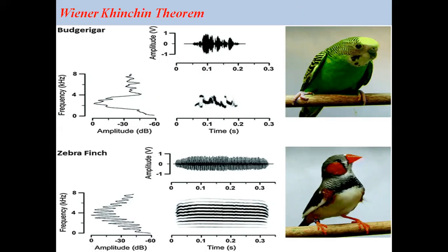Frequency analysis and time domain analysis are like two sides of a coin. From time domain analysis we get some information, and from frequency domain analysis we get other information, both of which are very important for a signal analyst to know the characteristics of a signal. For example, if you take two birds shown here — one is a budgerigar and the second is a zebra finch — you can see their voice in both time domain and frequency domain representation. Different birds have different types of voices, and accordingly their frequency spectra will also vary.